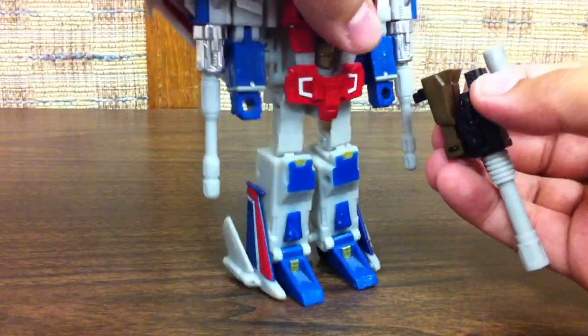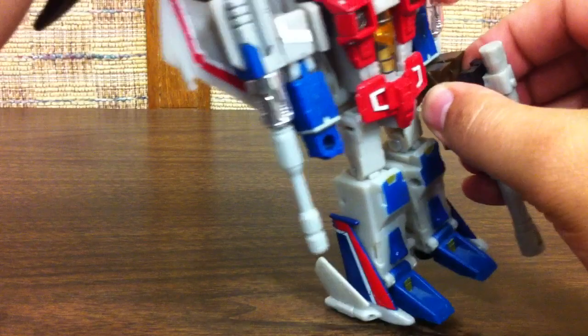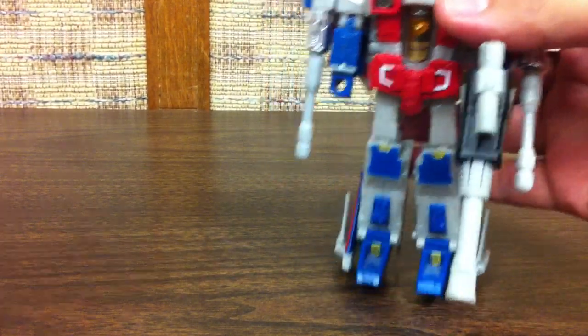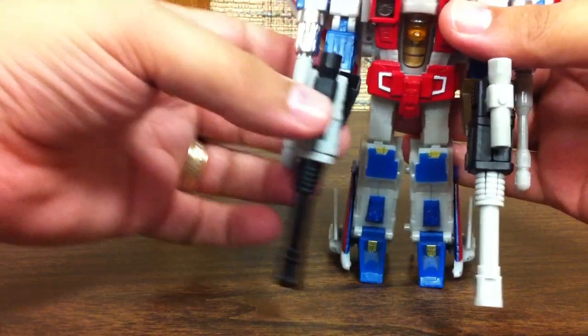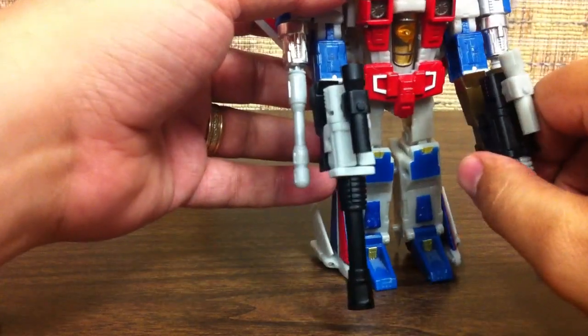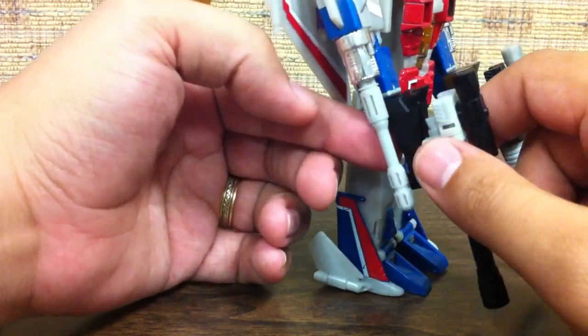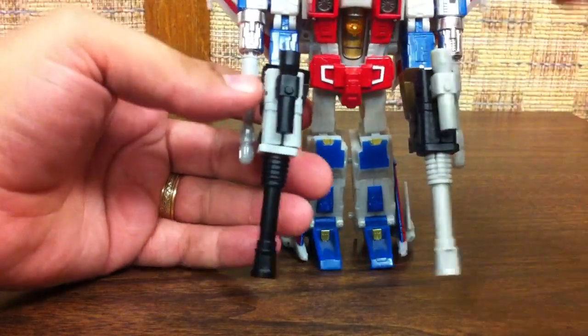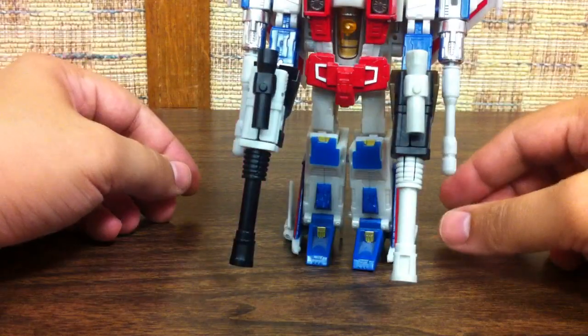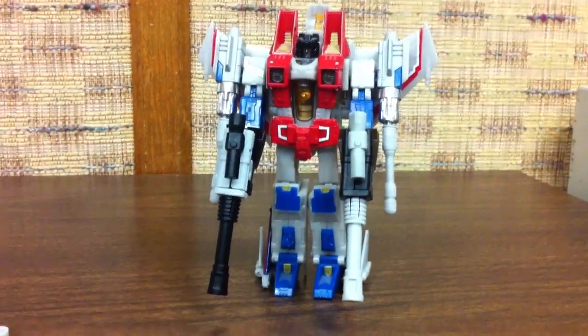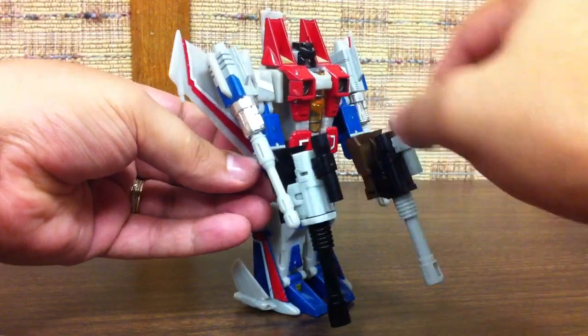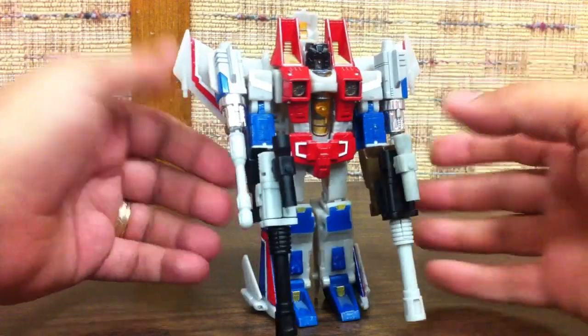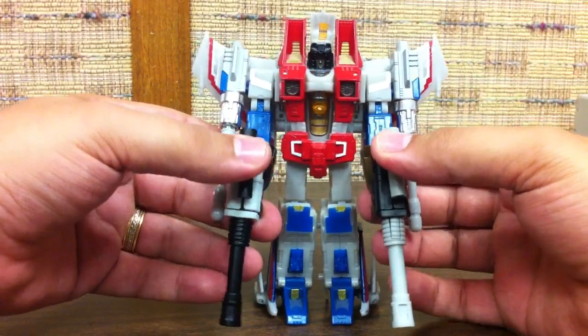Now Megagun's a little looser in Starscream's hands for some reason. And that's just slight variances between both the manufacturing process on these guys and the hands on your standard five millimeter pegs. He's not super loose. Just a little bit looser here than Brown King. And it's just, like I said, minor variances in each thing.